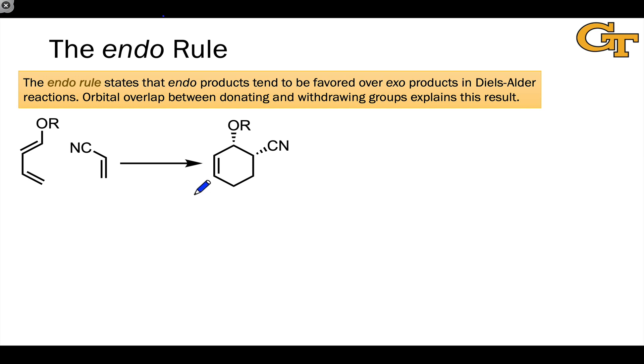Many Diels-Alder reactions are characterized by the possibility of formation of multiple diastereomers. For example, if we think about the combination of this diene with this dienophile, a transition state in which the cyano group assumes an endo orientation would give rise to this product where we form two new stereocenters and the substituents on the diene and dienophile, the alkoxy or OR group and the cyano group, are oriented in a cis orientation. This fits the rule that we saw in the previous video with the out-group and the endo-group cis.